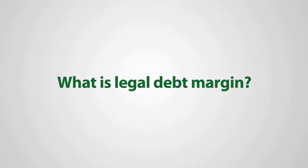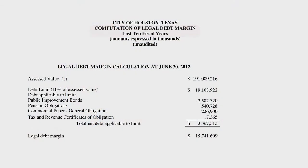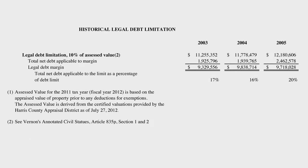The legal debt margin is the difference between the amount of debt that the government is currently carrying as compared to the amount of debt that the government is legally authorized to carry. Many governments have statutory or other restrictions on the amount of debt that they are authorized to issue.